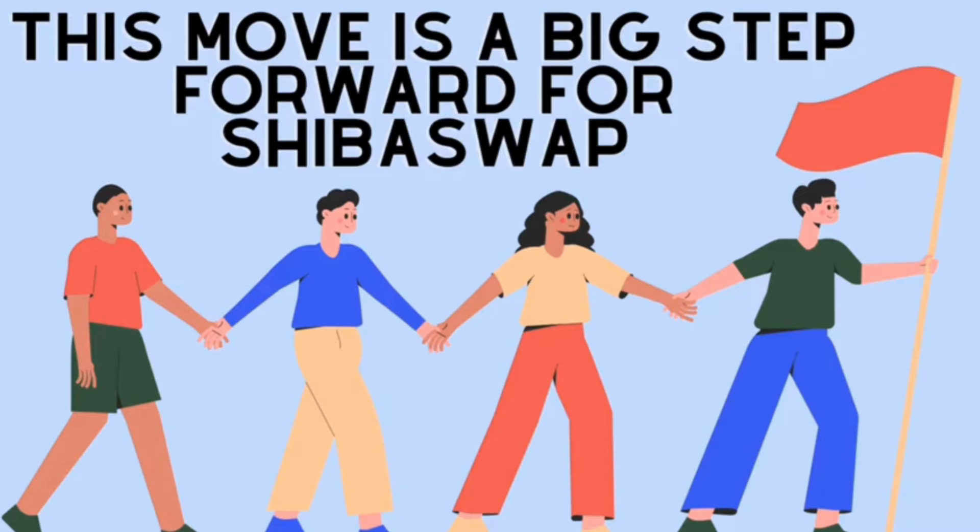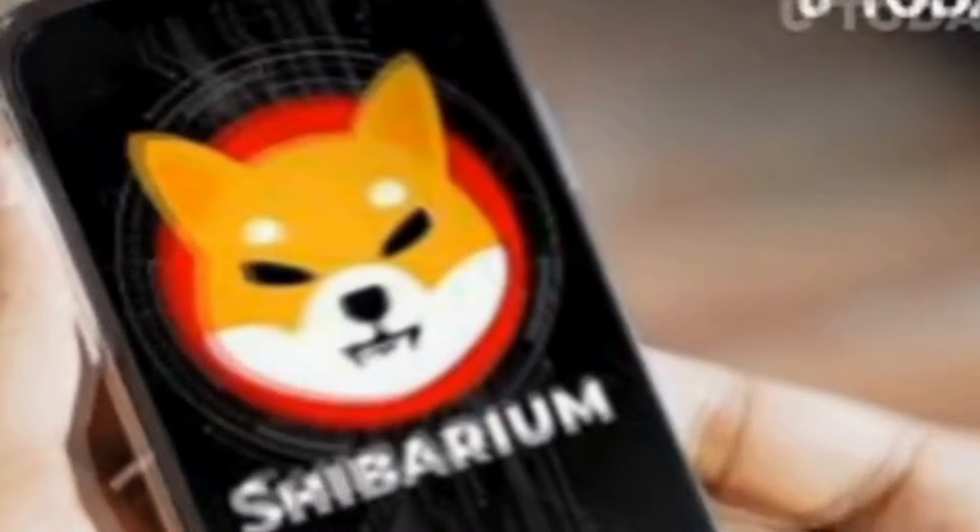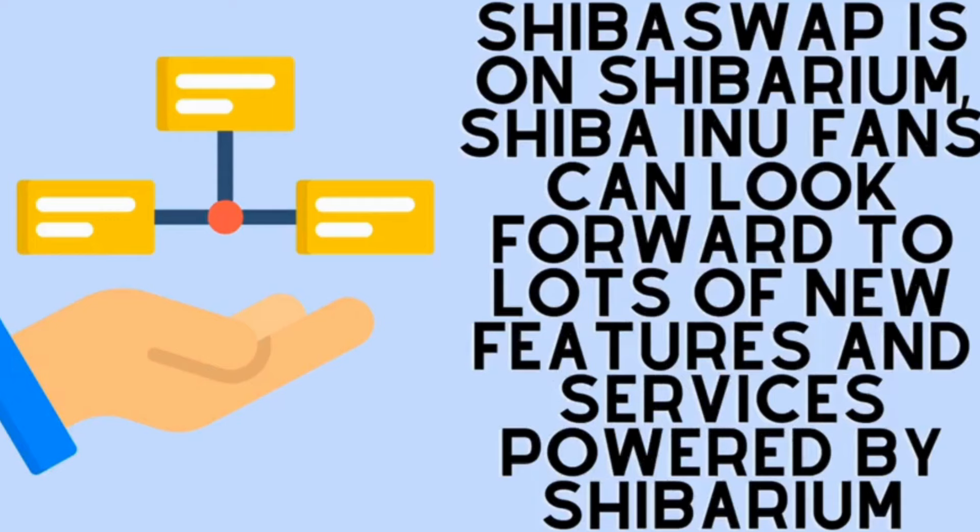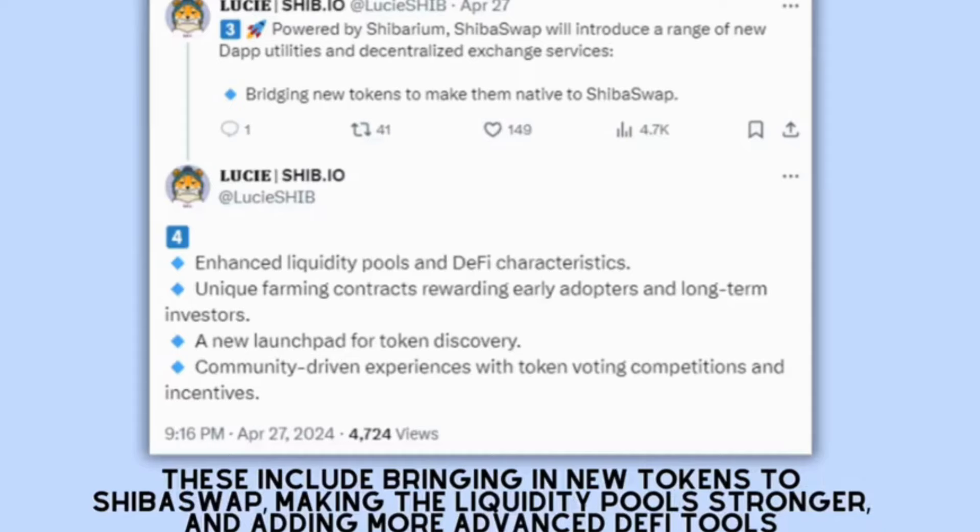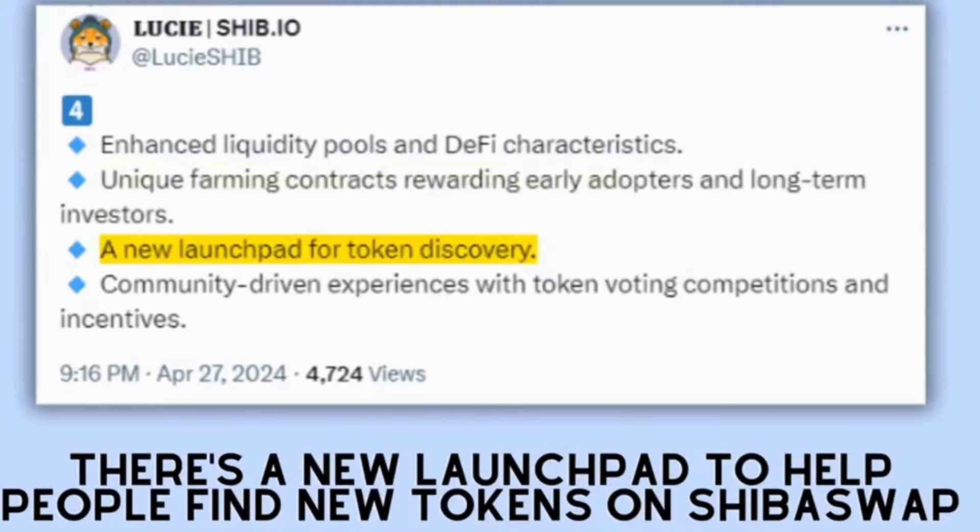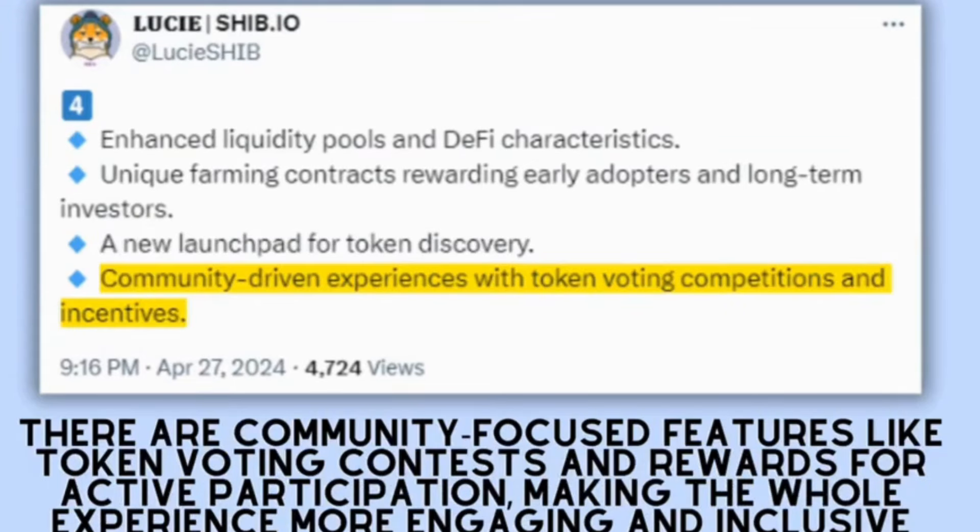This move is a big step forward for ShibaSwap, showing how the platform is going to change. Shibarium is growing and evolving. It opens up exciting possibilities within the Shibarium blockchain ecosystem. Now that ShibaSwap is on Shibarium, Shiba Inu fans can look forward to lots of new features and services powered by Shibarium. These include bringing in new tokens to ShibaSwap, making the liquidity pools stronger, and adding more advanced DeFi tools. What's more, users will get special farming contracts meant to reward both early users and those who stick around for the long term. Plus, there's a new launchpad for Shibarium to help people find new tokens on ShibaSwap, and there are community-focused features like token voting contests and rewards for active participation, making the whole experience more engaging and inclusive.